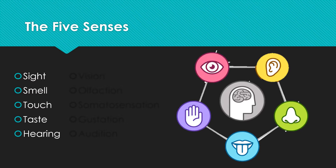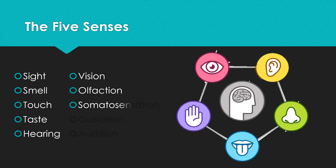In neuroscience, we like to use fancier terms. We refer to sight as vision, smell as olfaction, touch as somatosensation, taste as gestation, and hearing as audition.